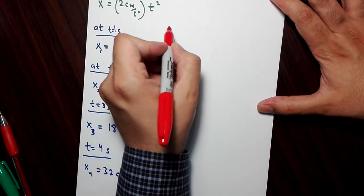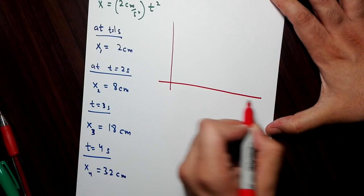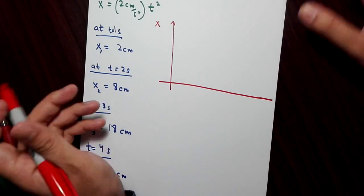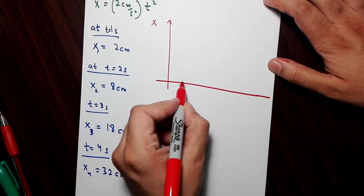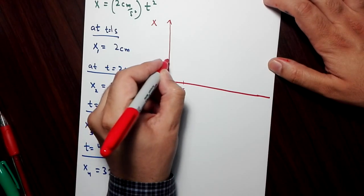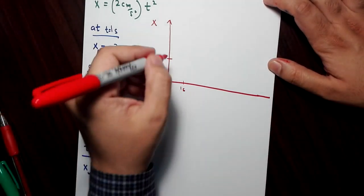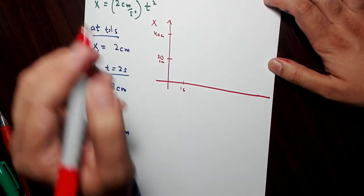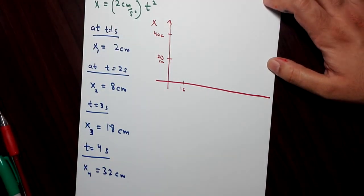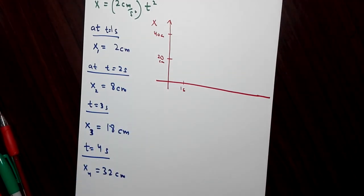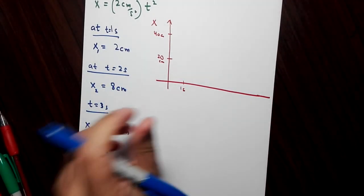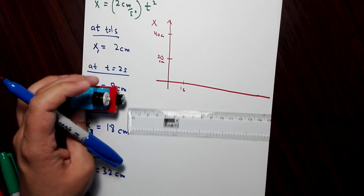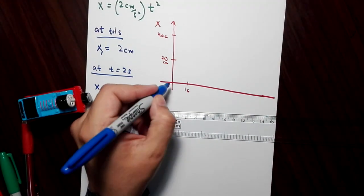The object is moving along a parabola. On the x-axis, let's say 20 centimeters and 40 centimeters are our scale markers. At t equals one second, the object is at two centimeters. Thomas is going to help us again — at t equals zero, x equals zero, so Thomas starts over here.